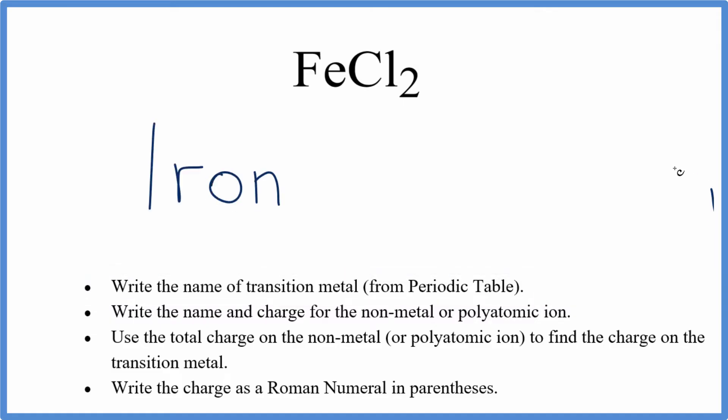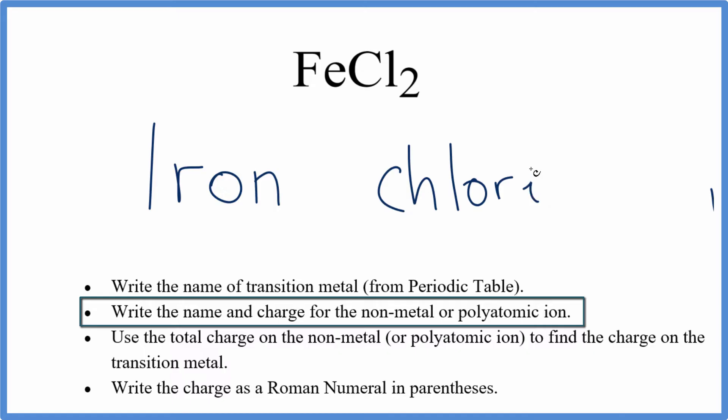And then we can write the non-metal, the chlorine. When we're naming ionic compounds here, we take the I-N-E off the end and change that to I-D-E. So right now we have iron chloride.